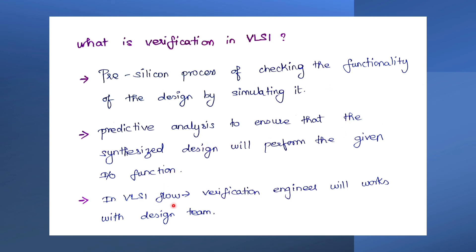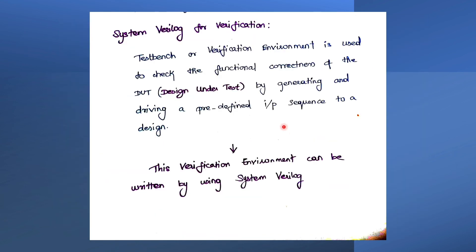In the VLSI flow, verification engineers work alongside the design team. When specifications are received, the RTL design team and the verification team start working at the same time. The design team architects and codes the design circuits, while the verification team writes the test bench according to the specification. When the RTL team finishes their design code, they provide that database to the verification team, who connects the design unit into their test bench and starts verifying.